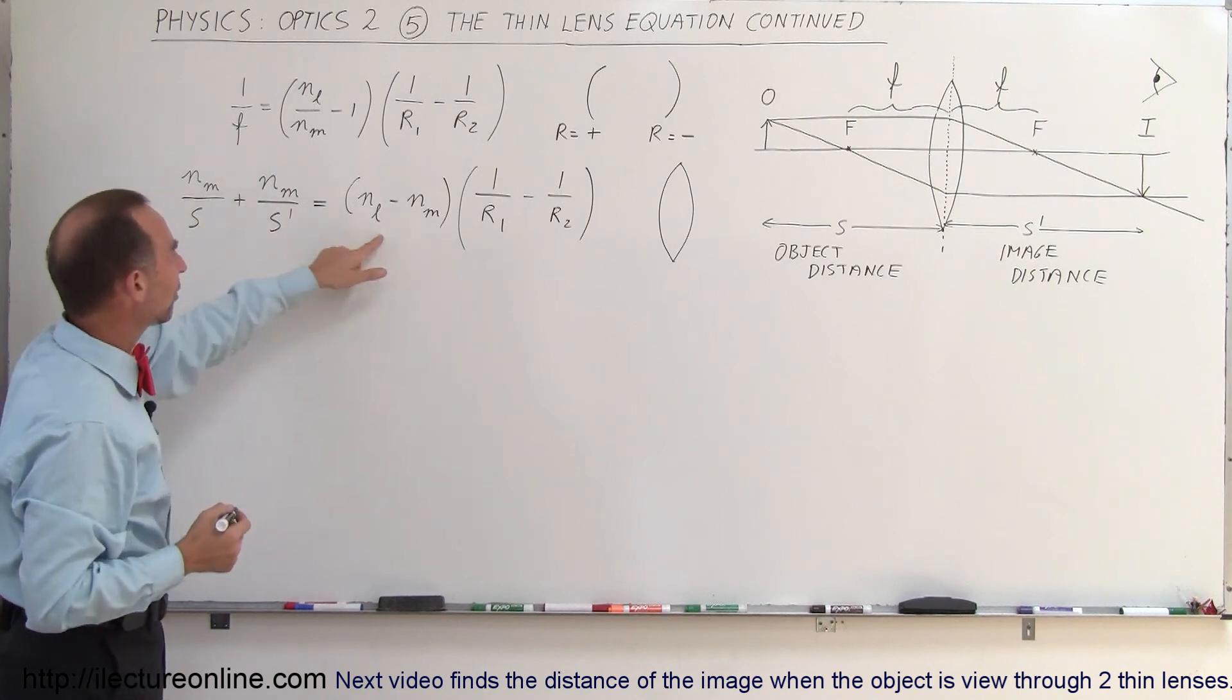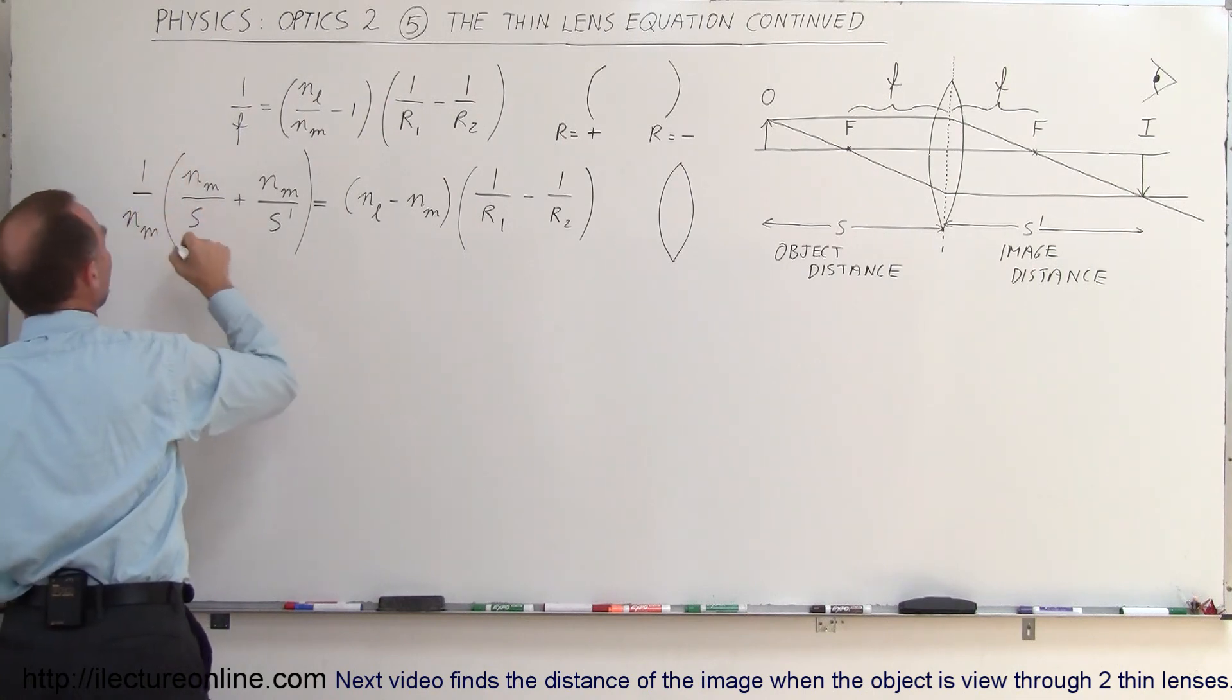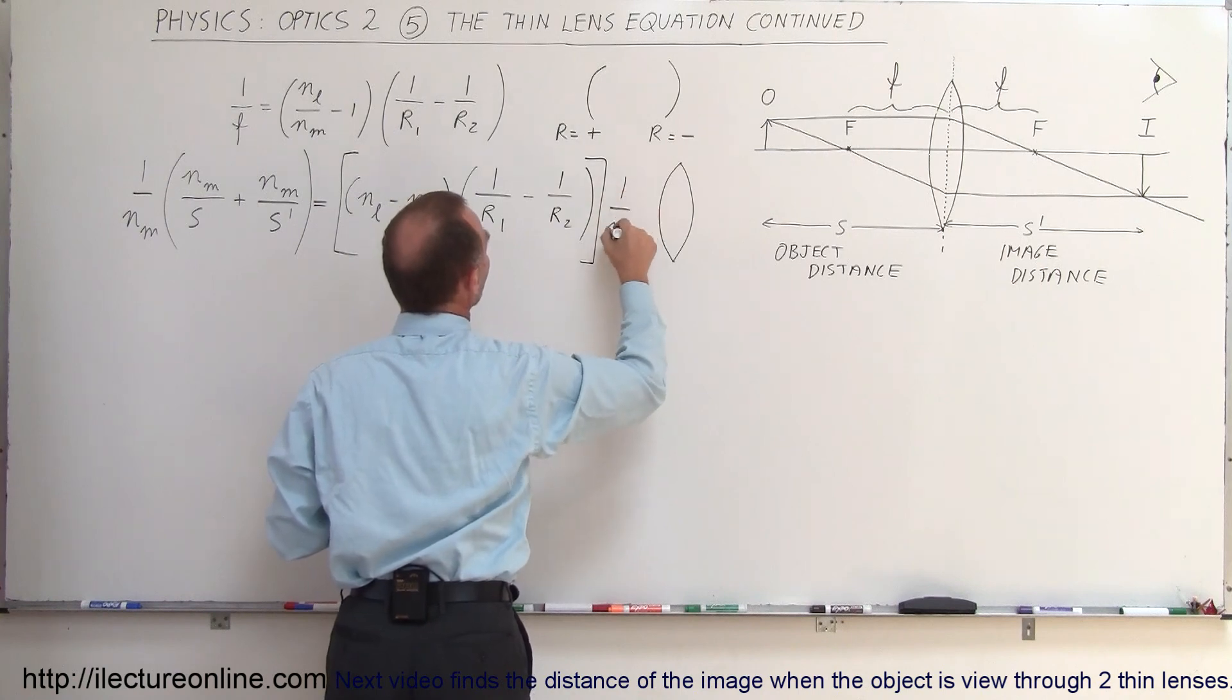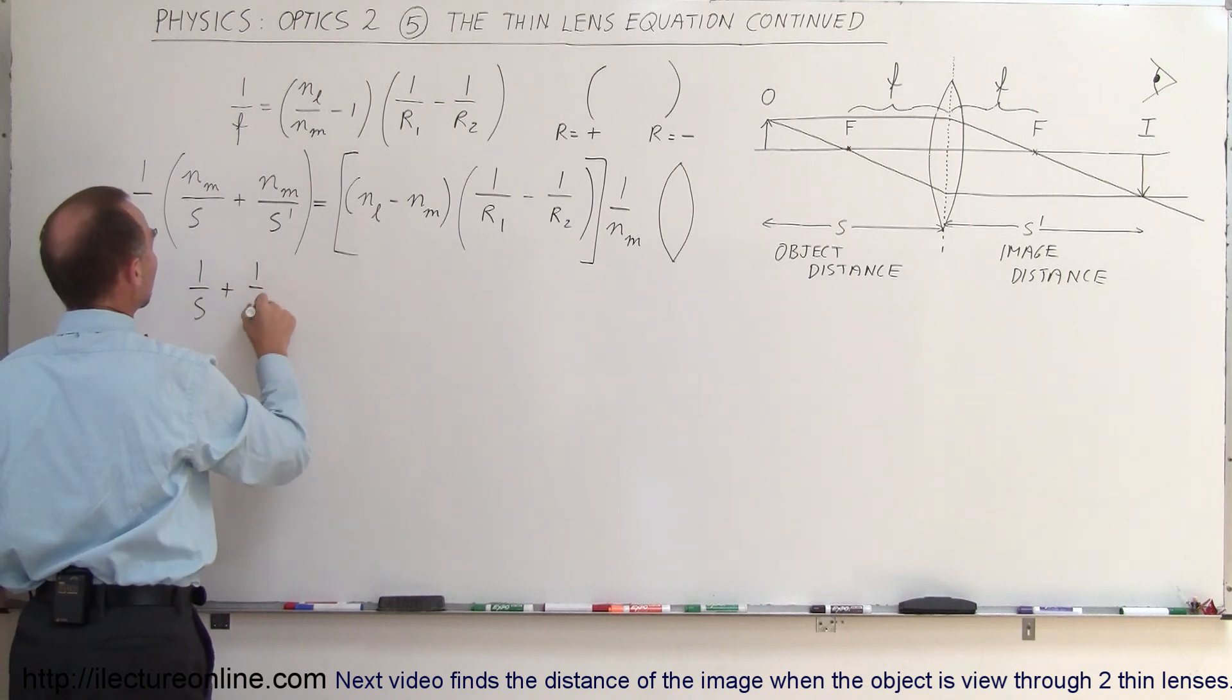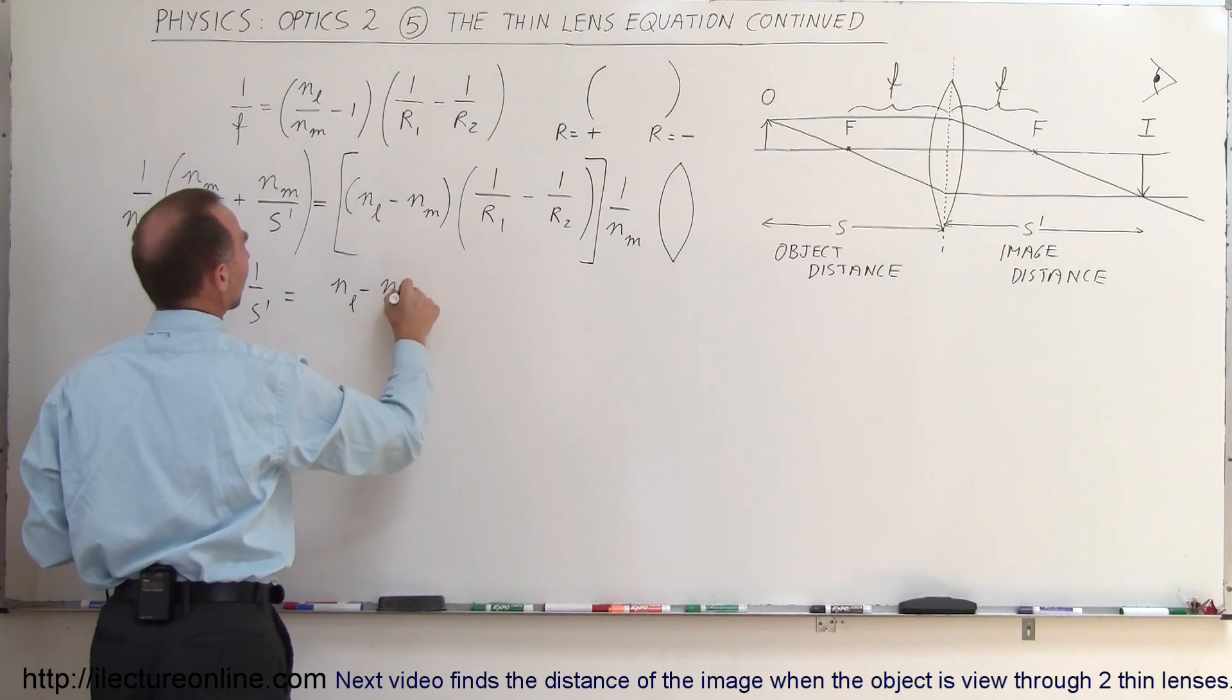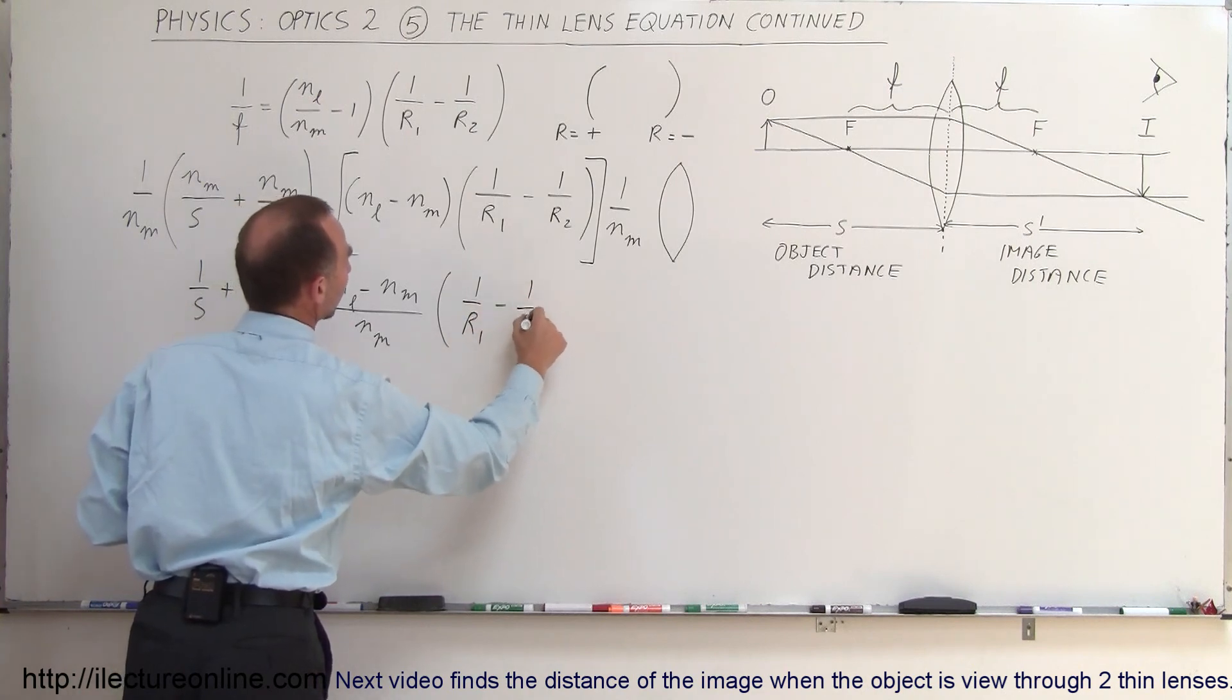Now if we divide both sides of this equation by N_M, we multiply both sides by 1 over N_M. What we get is 1 over the object distance plus 1 over the image distance equals (N_L minus N_M) divided by N_M times (1 over R1 minus 1 over R2).